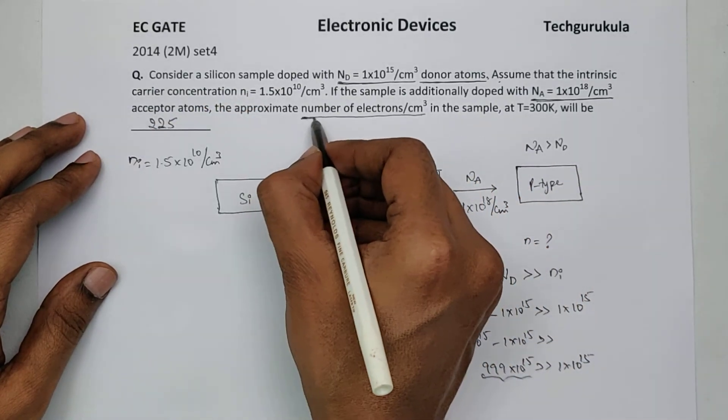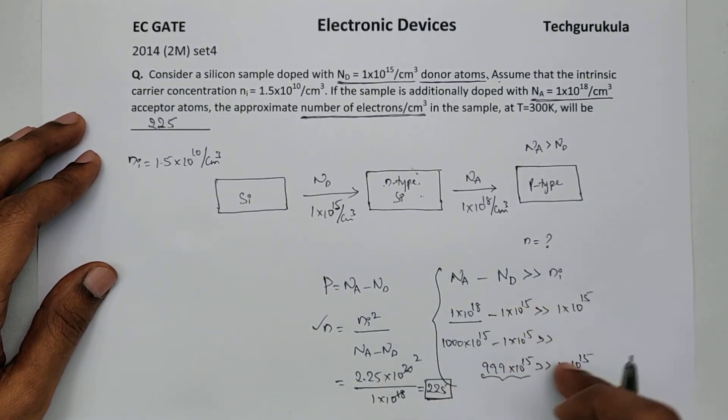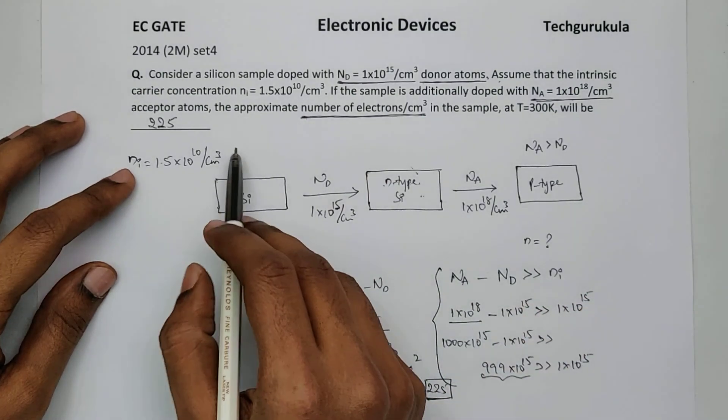They have already given the electrons per centimeter cube. So we have been taking everything per centimeter cube throughout even though we haven't mentioned here. So the answer is also per centimeter cube.